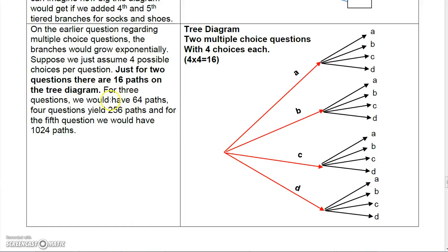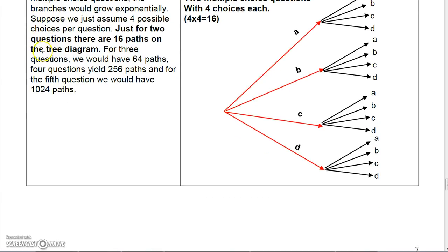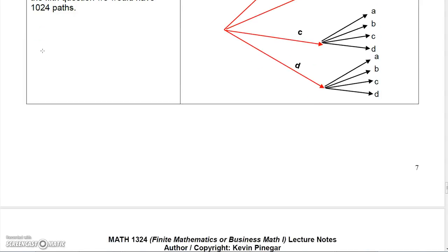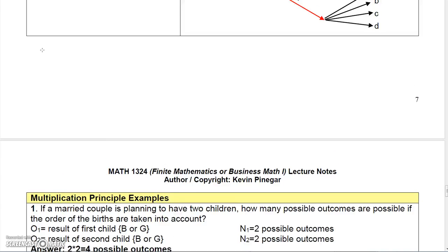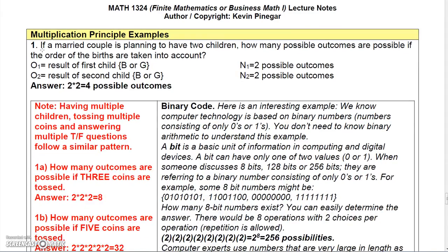So if you had three questions, you would branch off four more branches from each of these, and you would get 64 paths. The tree diagram is nice, but it doesn't really work when you have a lot of possibilities — it just gets too bulky.